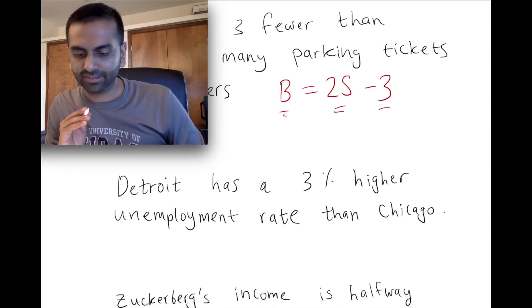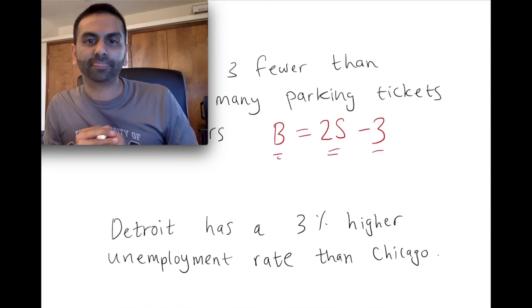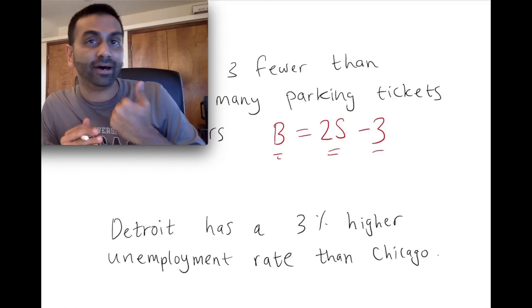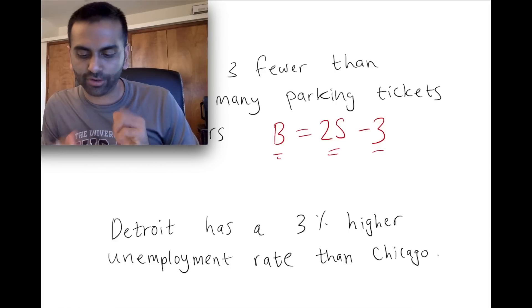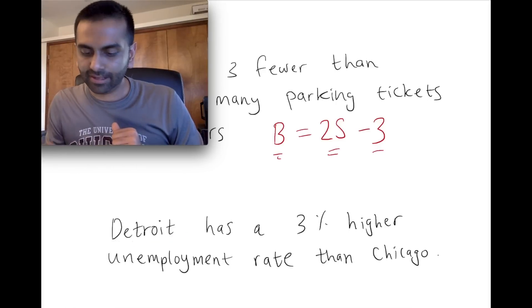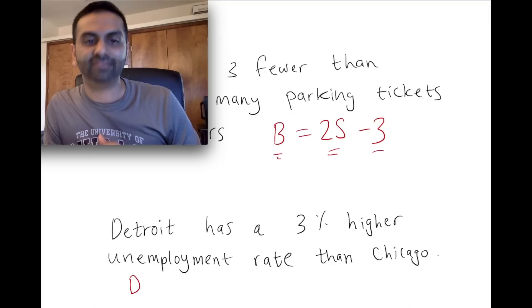So let's do an example here. Detroit has a three percent higher unemployment rate than Chicago. Again, first thing we're going to do, we're going to take ownership. We're going to call a variable d, and say that's the unemployment rate of Detroit. We're going